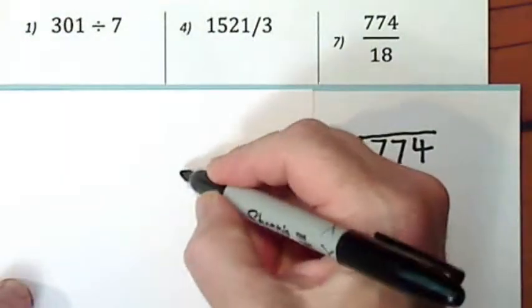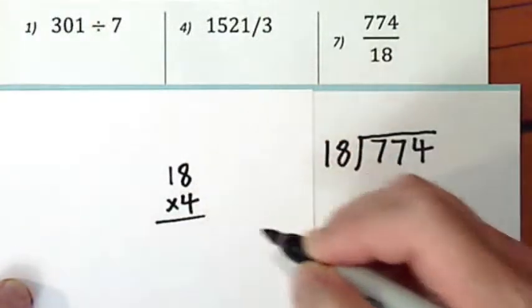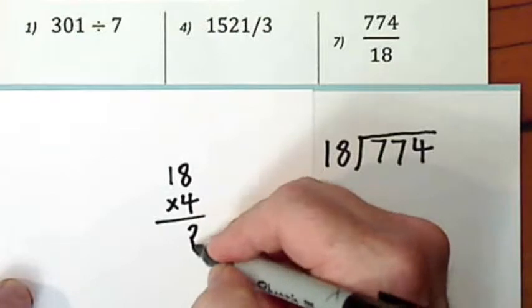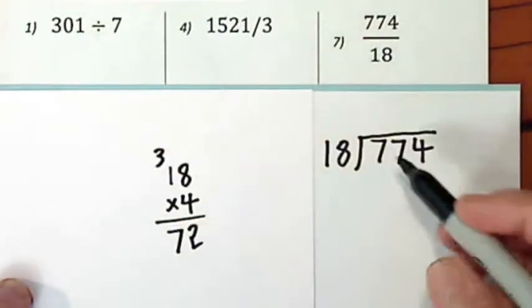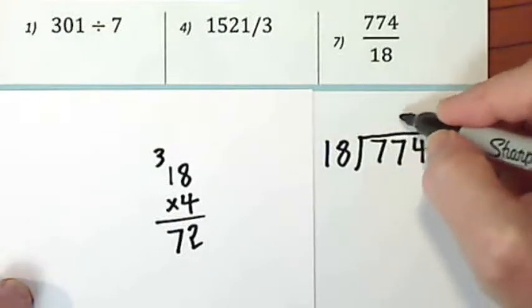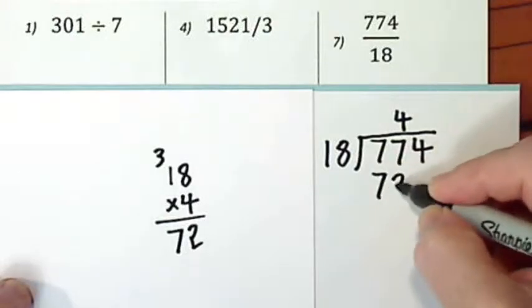So let's see, we'll try four and see if that gets us close. So that's seventy-two. That's pretty close. So four times eighteen is seventy-two.